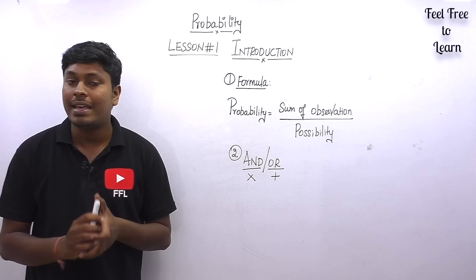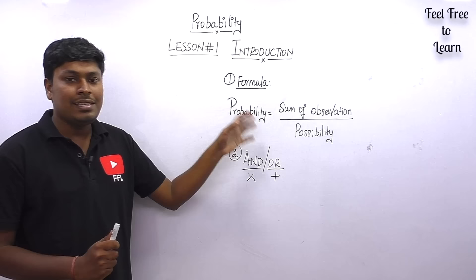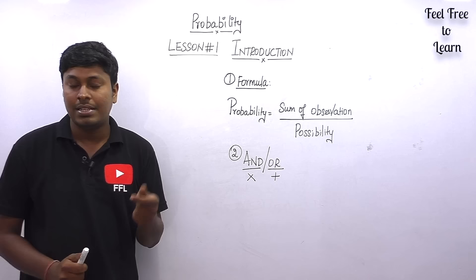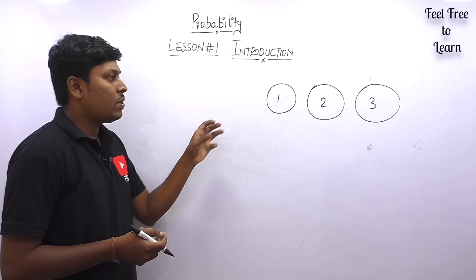Before solving all the questions, these three things are most important: one is the formula for probability; second is wherever you find the word 'and' use multiplication, and 'or' use addition; and the third is an important formula used in lesson number five onward.